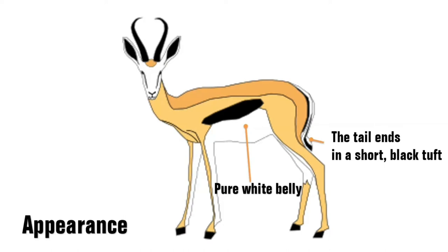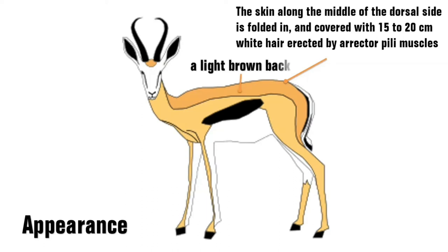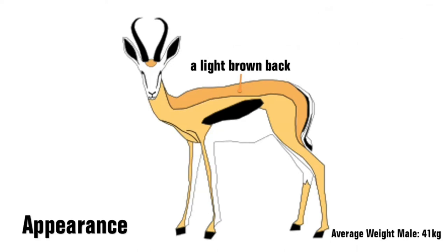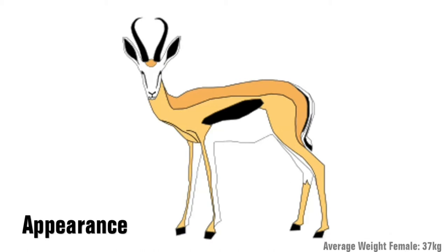The tail ends in a short black tuft and on the back is a special pouch. The skin along the middle of the dorsal side is folded in and covered with 15 to 20 centimetres of white hair which can be erected. On the back it has a light brown colouring. The male has an average weight of 41 kilograms while the average weight of a female is about 37 kilograms.